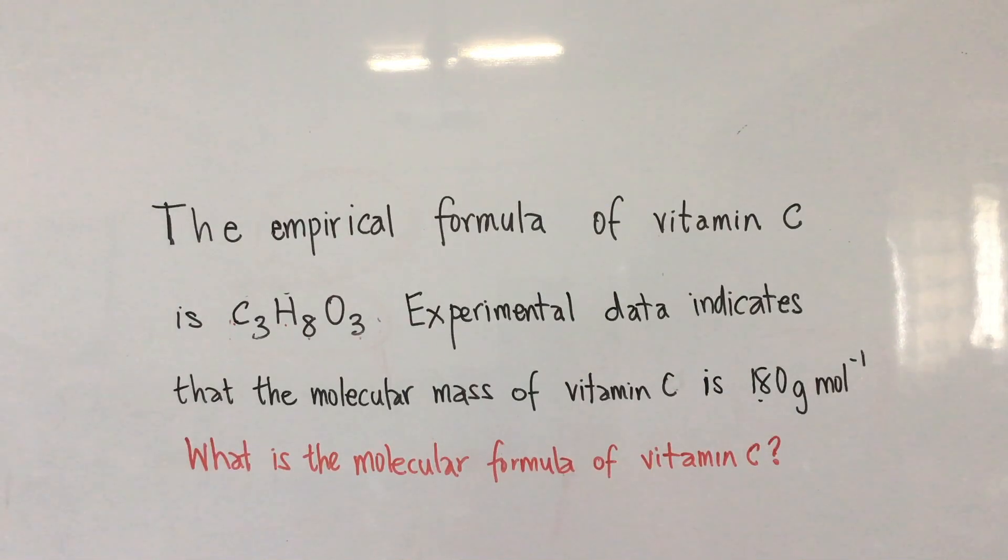The empirical formula of vitamin C is C3H8O3. Experimental data indicates that the molecular mass of vitamin C is 180 grams per mole. What is the molecular formula of vitamin C?